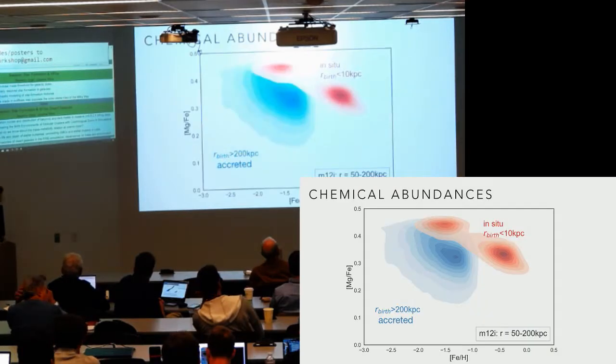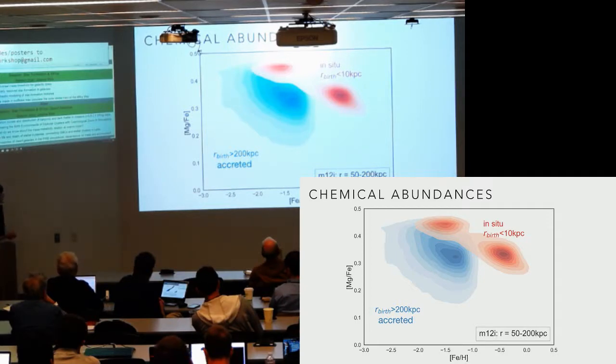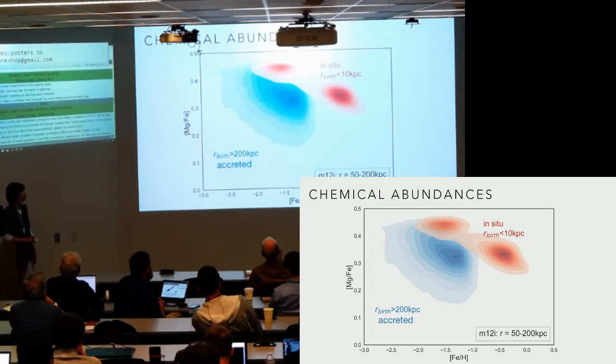We've also looked at their chemical abundances here. This is the kernel density estimate of the two populations in this metallicity versus magnesium over iron plot. As you can see, the in-situ stars—this red clump here—these two populations actually separate beautifully here in this one plot. The in-situ population, compared to the accreted one, they are more metal-rich and they are more alpha-enhanced, as they formed in a more massive progenitor and in deeper potential wells.